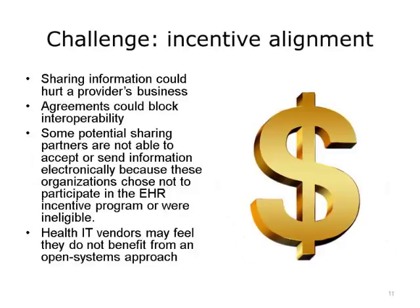A fifth challenge is the alignment of incentives. Sharing information could hurt a provider's business. The fee-for-service payment model, which has been the payment model in the United States for a long time, does not encourage interoperability at all. In fee-for-service, a provider has no incentive to work collaboratively with other organizations since they are paid for the service being given, not the overall health outcomes of the patient. In fact, sharing data between organizations makes it easier for patients to go elsewhere for care, which could mean a loss of revenue. In a competitive world, why would you want to share? Inadvertently, sharing information with the wrong organization or people opens you up to liability for breaches, so organizations are used to not sharing to keep a patient's data safe.